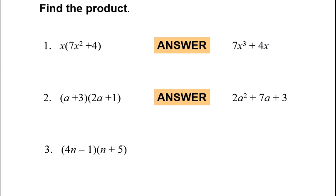You can FOIL again or use the box method, and you should get 4n squared plus 19n minus 5. It's up to you to show that work and to bridge the gaps — I went about it a different way for every single problem.